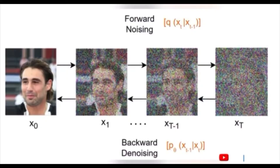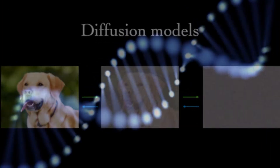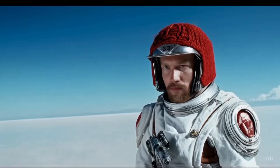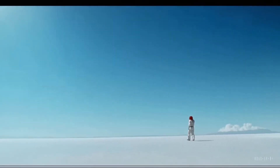Sora functions as a diffusion model, tasked with predicting the original clean patches from input noisy patches and conditioning information, such as text prompts. The key idea behind diffusion models is to iteratively apply a series of reversible transformations to a set of noisy samples. These transformations gradually reduce the level of noise in the samples, making them increasingly resemble the desired output. By learning the dynamics of this diffusion process through training on large datasets, diffusion models can effectively generate realistic and high-resolution images.